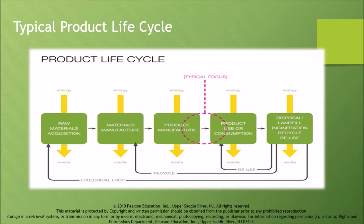A typical product life cycle is linear. At each stage, there are material, energy, and labor inputs and waste outputs that create environmental and social impacts.